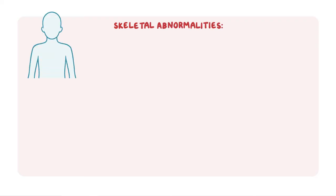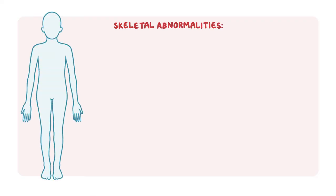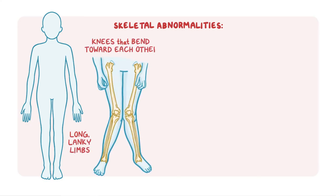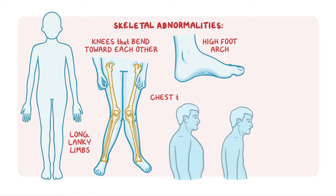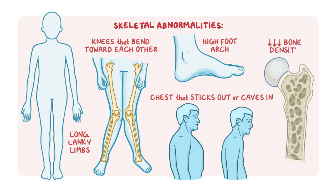Skeletal abnormalities also occur, with people affected by the condition characteristically having long, lanky limbs and knees that bend towards each other when standing up straight. The arch of the inside of the foot may be high, with the majority of the foot not touching the ground. The chest may also stick out more than usual or cave inward. Older individuals with CBS deficiency tend to experience a decrease in bone density, making it easier for their bones to fracture.